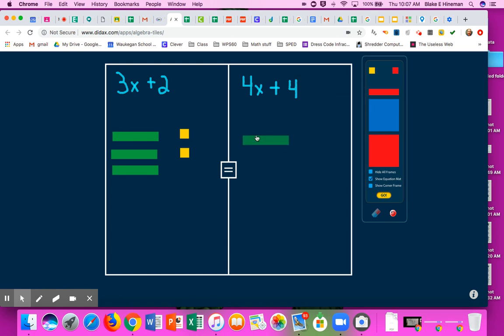Over on this side, we're going to say that we have 4x's: 1, 2, 3, 4. And 4 positives. So that's what it looks like. And that's a balanced equation.